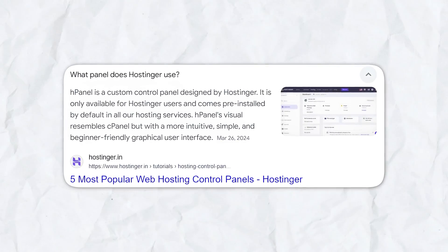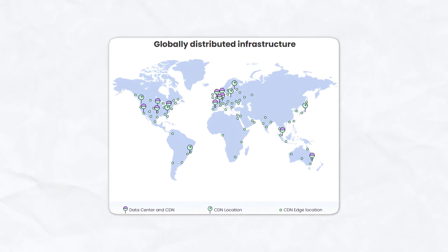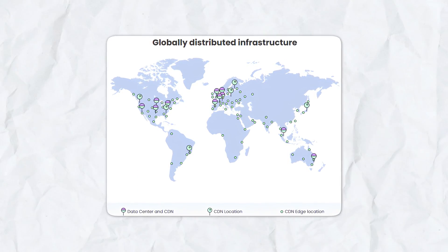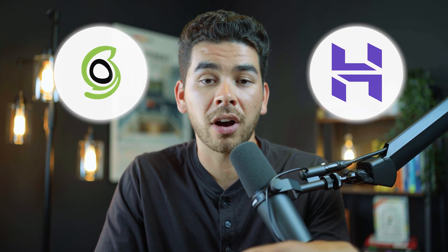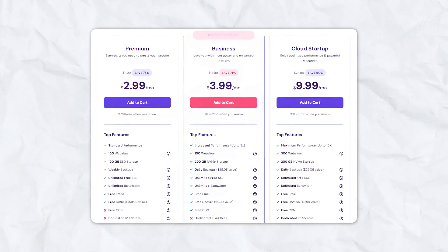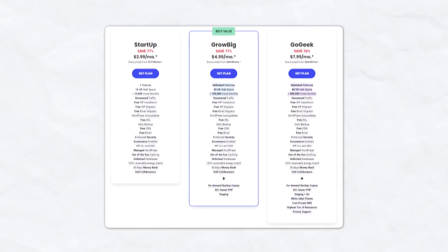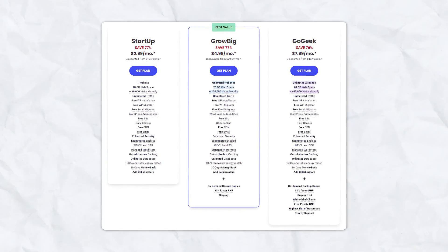For ease of use, both platforms offer a very intuitive control panel — SiteGround uses cPanel while Hostinger uses their own hPanel. Both platforms are going to be extremely user friendly. For data centers and uptime, SiteGround has a broader global presence with data centers in more locations and may offer better service in your specific location, but both offer 99.99% uptime so you're really not going to have an issue. Our personal preference is Hostinger — they really can't be beat with their super affordable pricing. SiteGround is also an amazing option with very similar features.